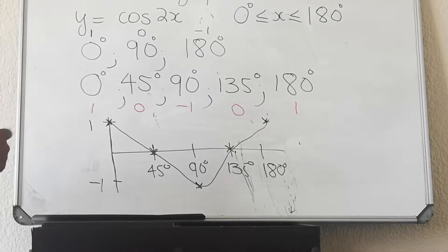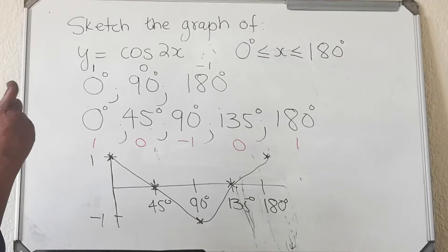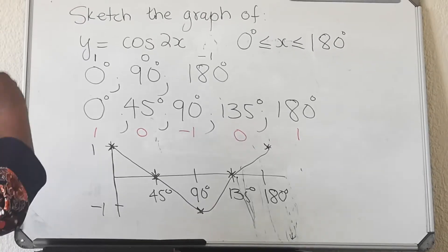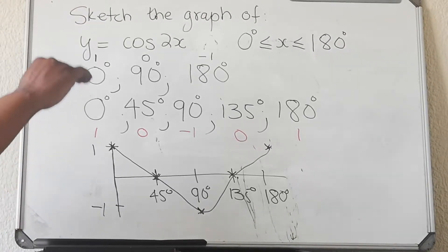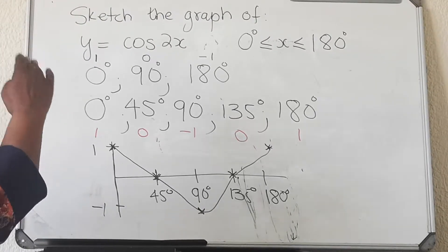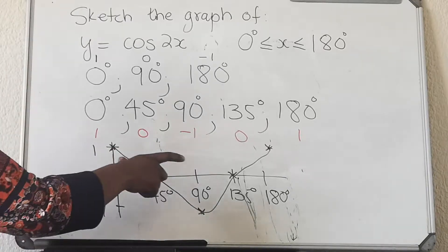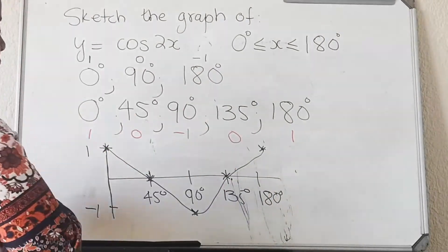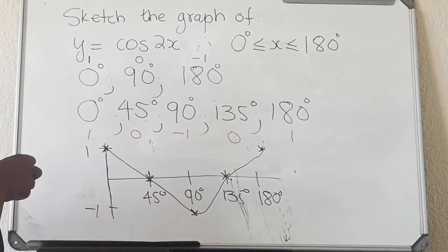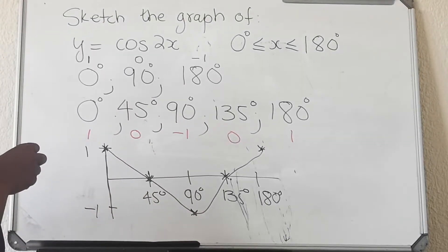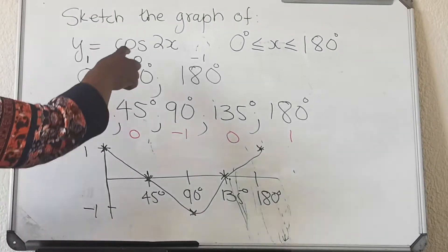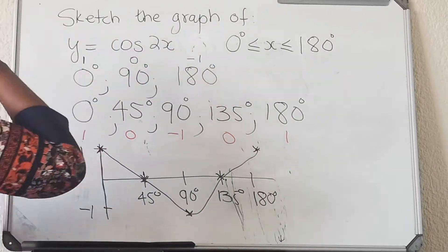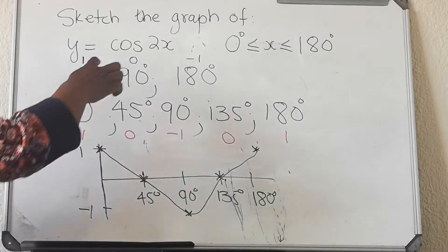Remember: the original cosine graph completes one wave at 360 degrees, but when it's compressed like this, the wave is completed at 180 degrees. The effect of K is that it will either stretch the graph if K is a fraction, or compress it if K is a whole number greater than one.